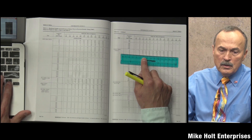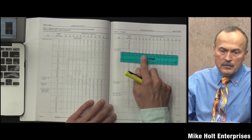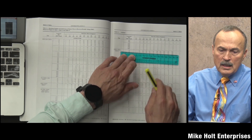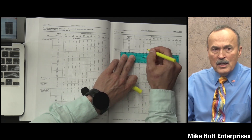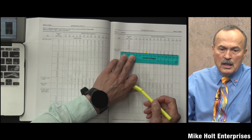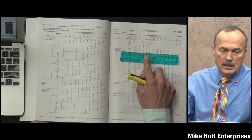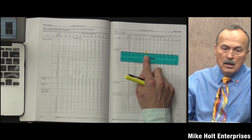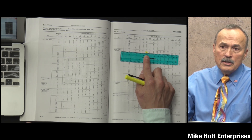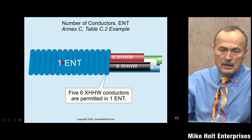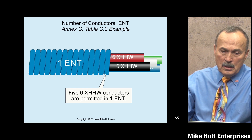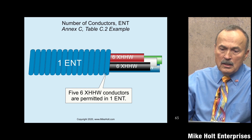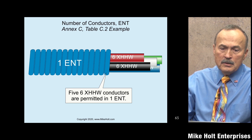How about 26 #12 THWN-2 conductors - what size raceway, or how many can fit in a 1-inch raceway? Going to Annex C, a 1-inch EMT cannot hold 26 #12 THWN-2 conductors. So therefore you'd need a larger size - the answer for a 1-inch EMT falls short of 26.